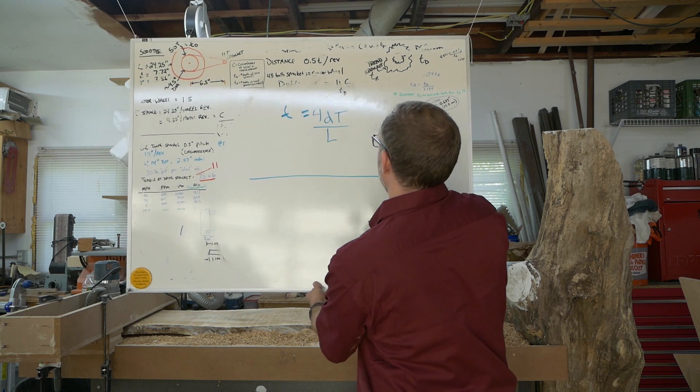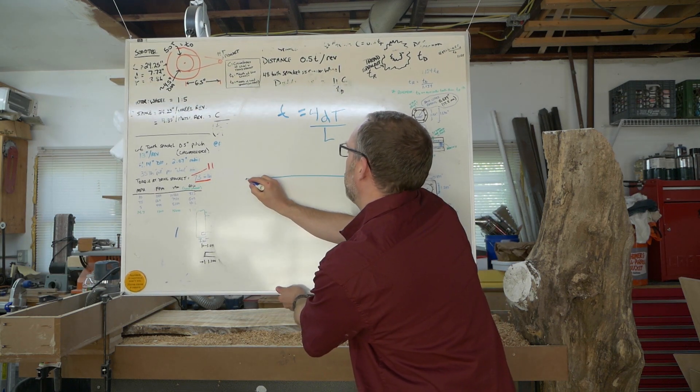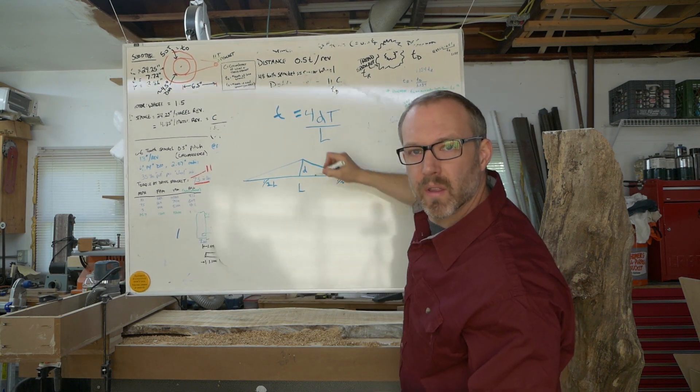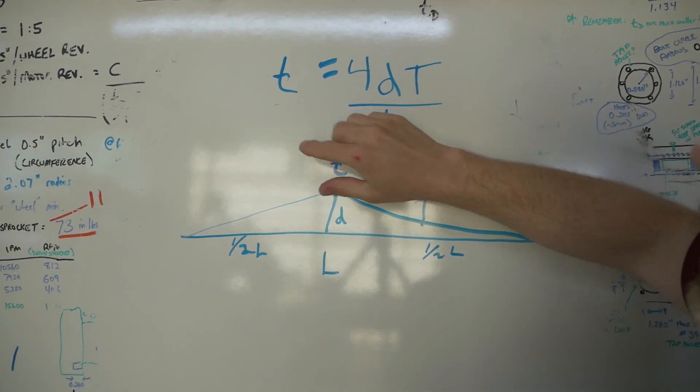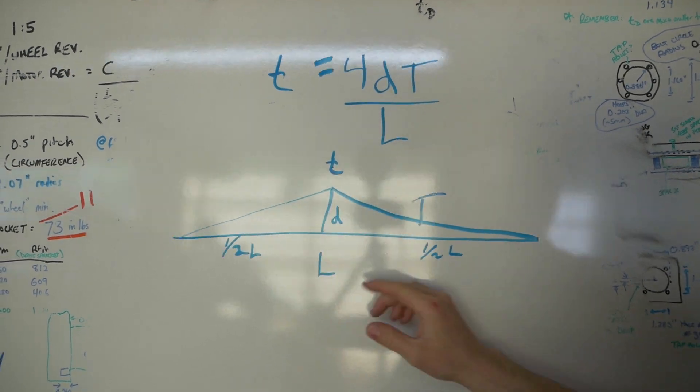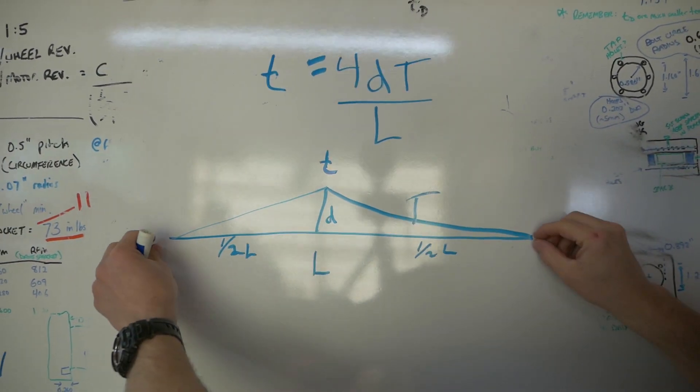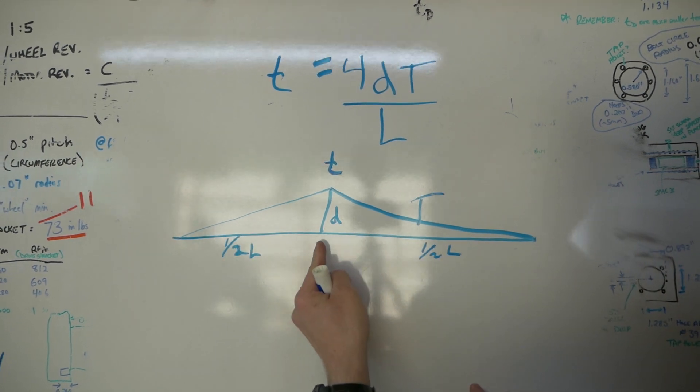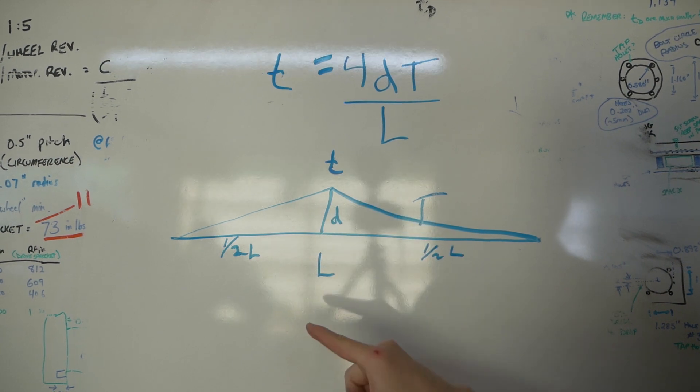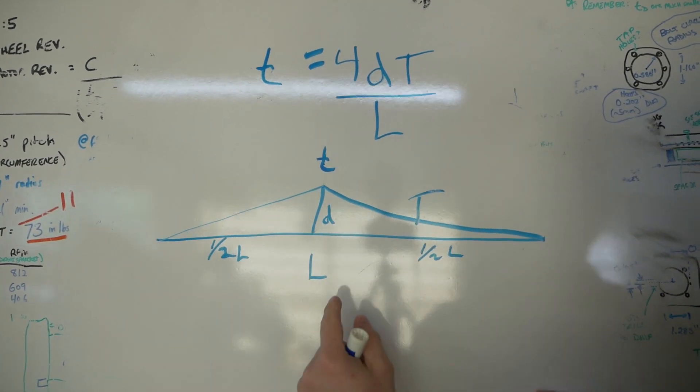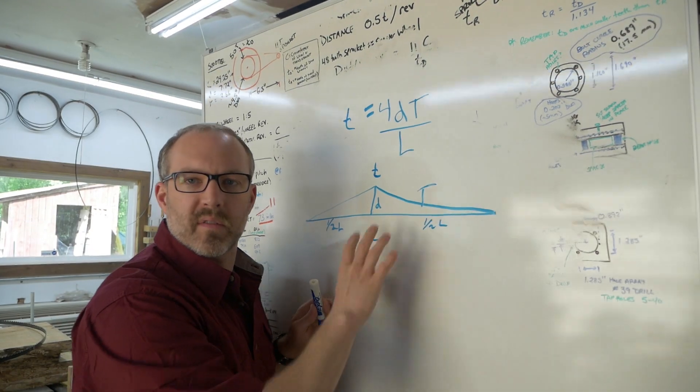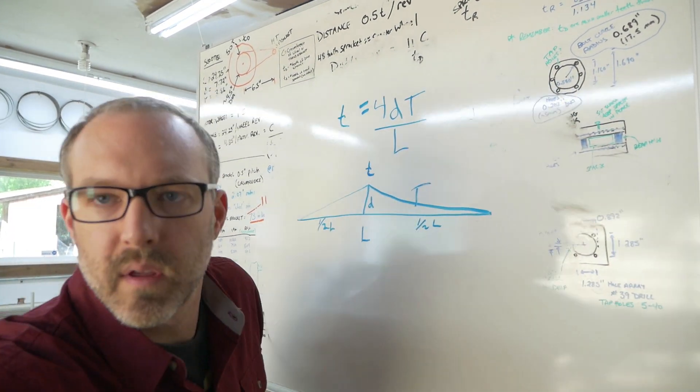So I thought we could take a look at this equation and see how it might relate to a saw blade. And I know in the real world that things get a little bit more complicated. There's other variables. But I thought maybe we could just have a discussion about it and just see how it might make sense. Okay, so the equation goes like this, and this relates to a string. Say this string has tension on it, and say it's being plucked like this.